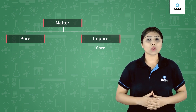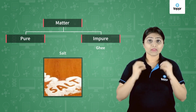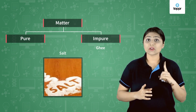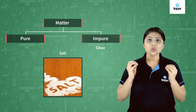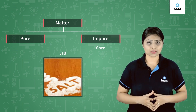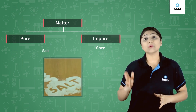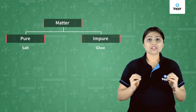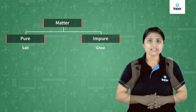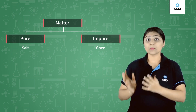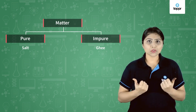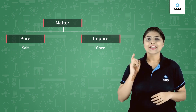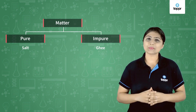Let's take the example of salt. When you check salt, it is just made up of one kind of particle and all the particles look the same — they have the same texture. So salt is said to be a pure matter. Anything that is made up of just one kind of particle is called pure matter. Dana dana egg samaan — that means it is a pure matter.